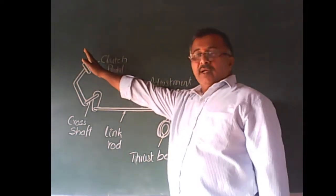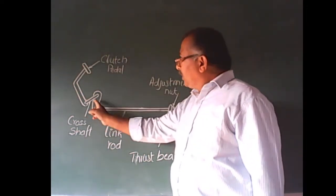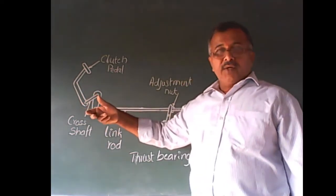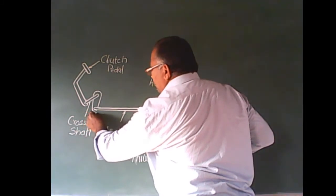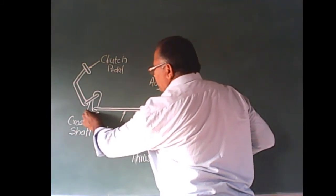When clutch pedal is operated, cross shaft rotates and this arm swings back.